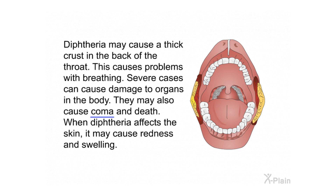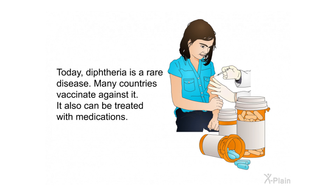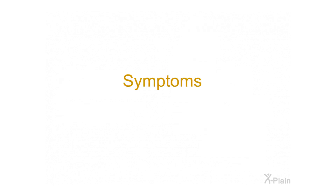Diphtheria may cause a thick crust in the back of the throat, which causes problems with breathing. Severe cases can cause damage to organs in the body, and may also cause coma and death. When diphtheria affects the skin, it may cause redness and swelling. Today diphtheria is a rare disease — many countries vaccinate against it and it can also be treated with medications.